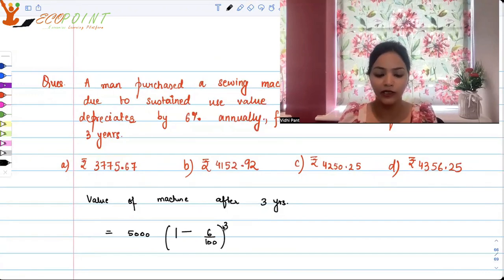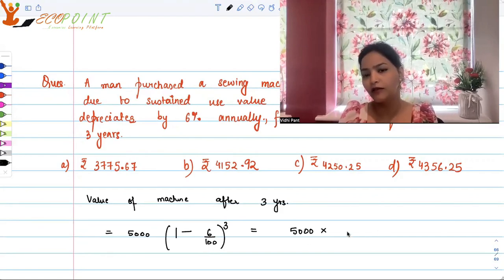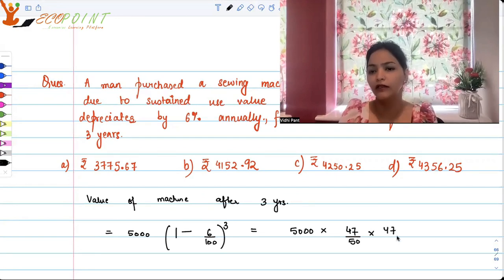So this is what we have to do, and this will give us 5000 multiplied by, if you open this up and divide by 2, you get 3, you get 50, so 50 minus 3 gives you 47, 47 upon 50 into 47 upon 50, three times basically, so power 3, 47 upon 50 into 47 upon 50.